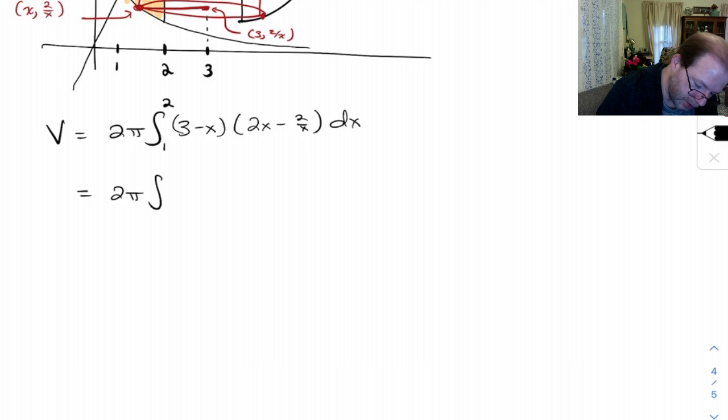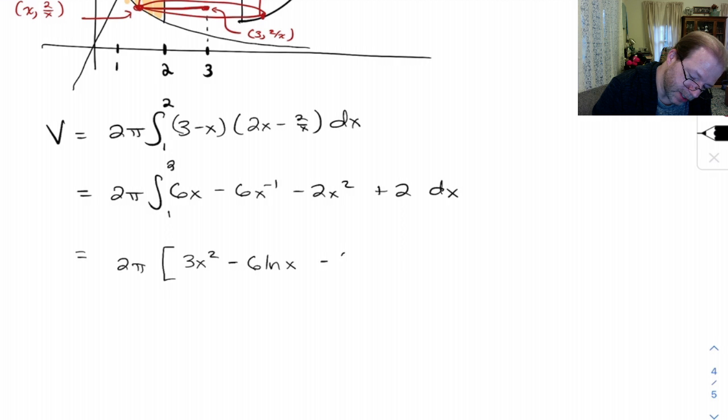When I multiply this out, let's see, I've got to foil these guys. So the first gives me 6x, outside gives me minus 6 over x. I'm going to write that as 6x to the minus 1. The inside gives me minus 2x squared, and the last gives me plus 2. So I get 2 pi. I'm going to integrate this, 6x gives me 3x squared. When I integrate this, that gives me 6 natural log of x. When I integrate that, I get minus 2 thirds x cubed. When I integrate 2, I get 2x. And we're going from 1 to 2.